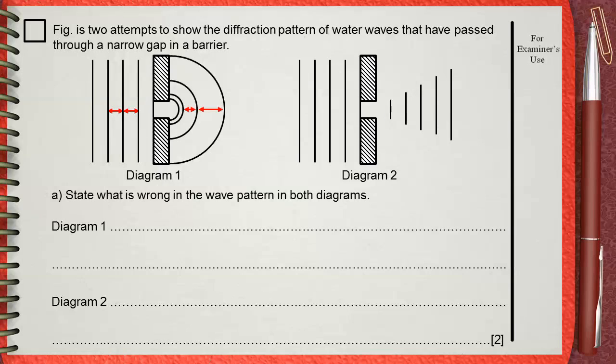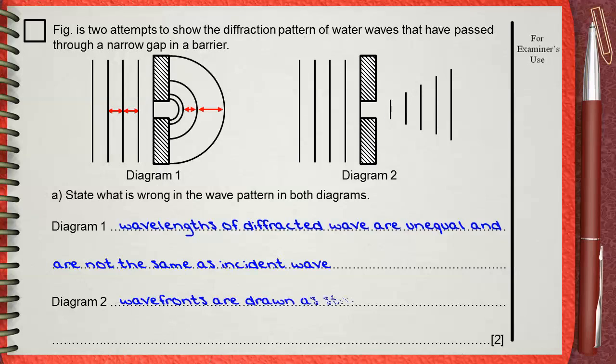So in diagram 1, wavelengths of diffracted waves are unequal and are not the same as incident waves. In diagram 2, wave fronts are drawn as straight lines. They must be circular.